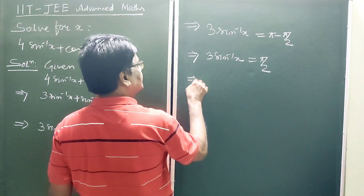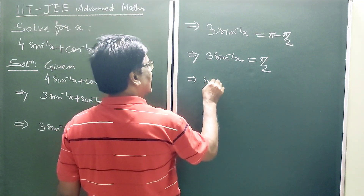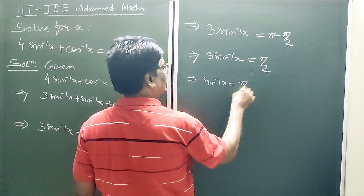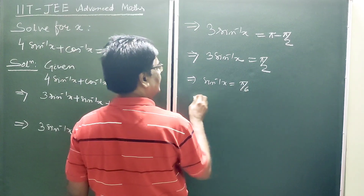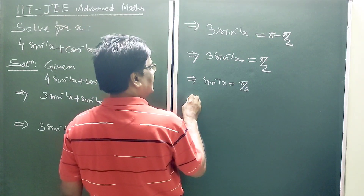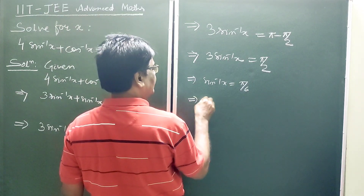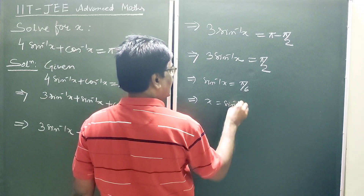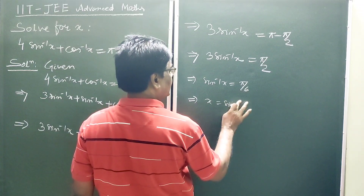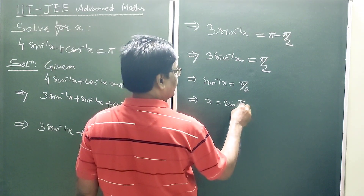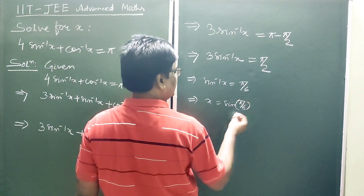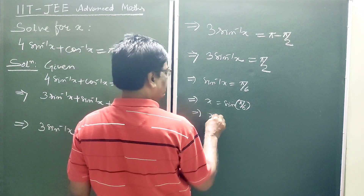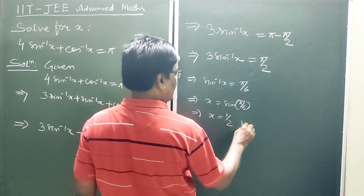This implies sin⁻¹(x) is equal to π/6, which implies x is equal to sin(π/6), so x is equal to 1/2.